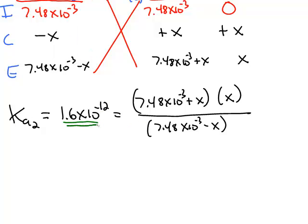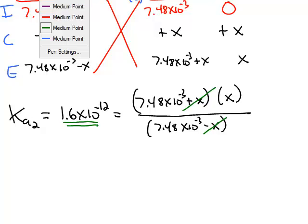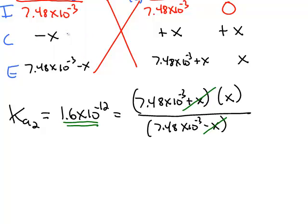Now because this K is even smaller, we know that this approximation method should be valid here. We can neglect this x in the numerator that's being added. We can also neglect this x in the denominator that's being subtracted. And if the assumption method is valid, that makes this problem even easier because now 7.48 times 10 to the negative 3 cancels. And we're left with x is just the second Ka, 1.6 times 10 to the negative 12th. If you do the approximation, you're going to find that that's definitely less than 5%. So the assumption method is valid here.